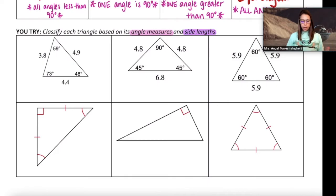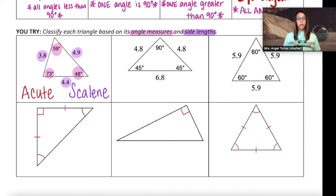So if we looked at this first one I noticed that all three of the angle measures 73, 59, and 48 are less than 90. So we would call this an acute triangle based on its angle measures. I also noticed that all of the side lengths 3.8, 4.9, and 4.4 are different so we would call that a scalene triangle. So altogether the full name and classification of this triangle is acute scalene.